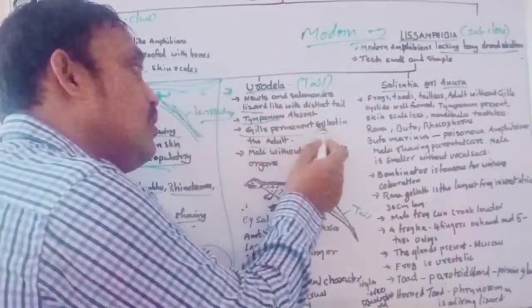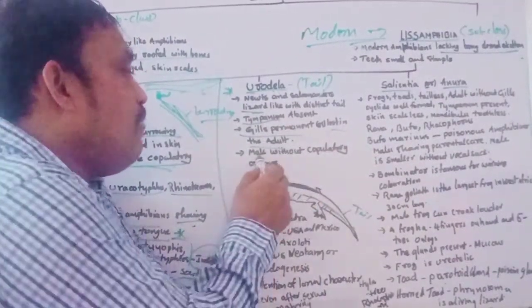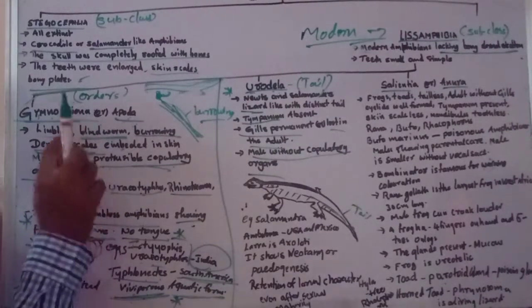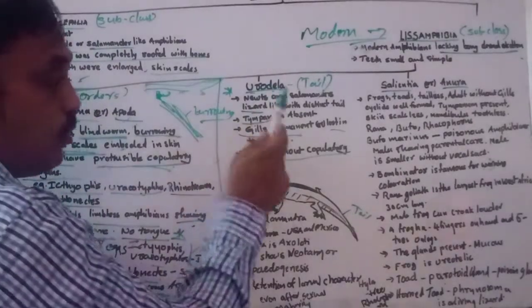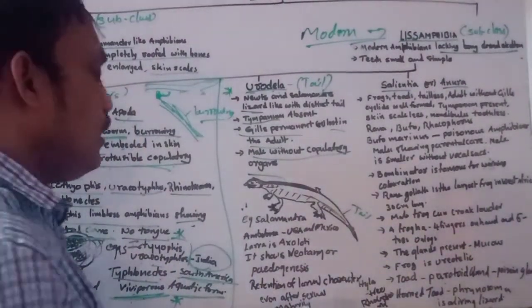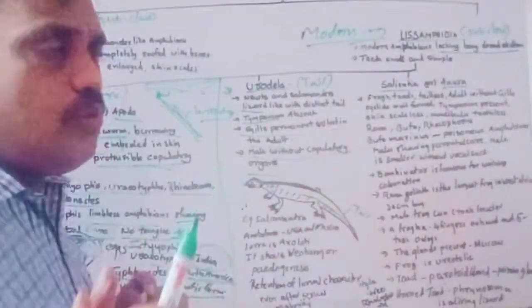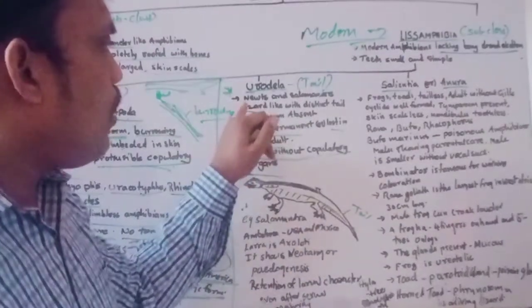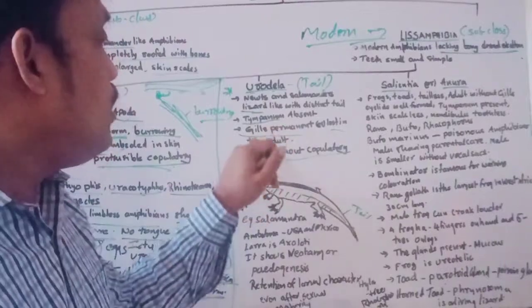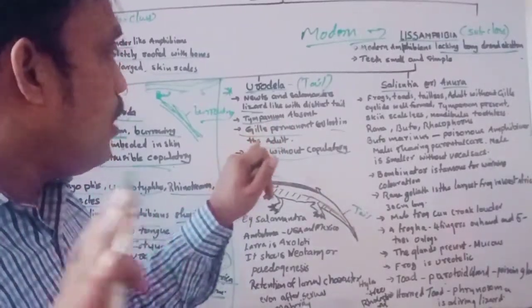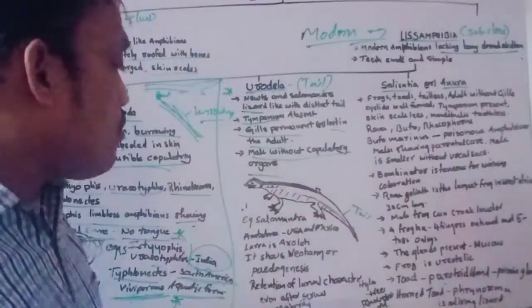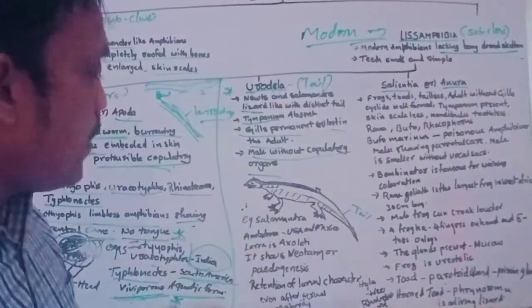In adult frogs, gills disappear, but in Urodela gills persist even in adults for some species. Also, the male has no copulatory organ — contrast this with Gymnophiona where the male has a protrusible copulatory organ. Urodela examples include Salamandra and Ambystoma.